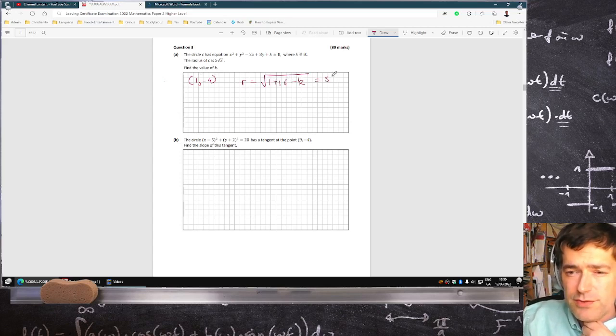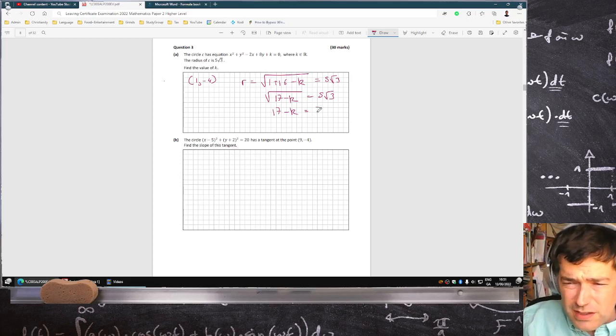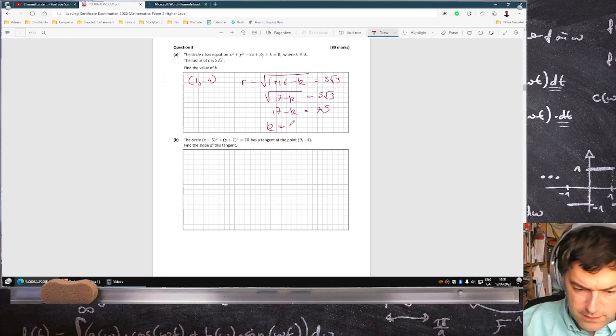And that's supposed to equal 5 root 3. So that means root 17 minus k equals 5 root 3. So that means 17 minus k, if you square everything, is 75. 5 root 3 squared? Yeah, 75. So that means k will be 17 minus 75, which is minus 58.